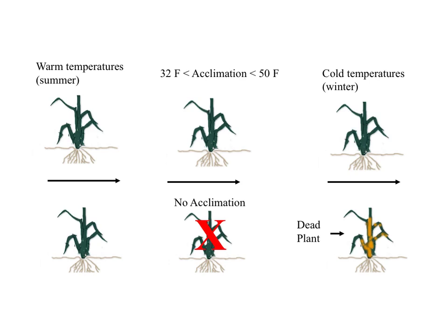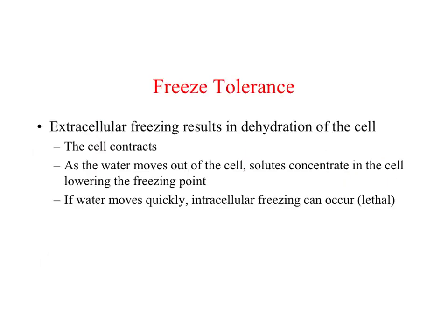Cold acclimation helps explain why a plant growing at a warm temperature and then exposed to freezing is killed, while the same plant exposed to a cold acclimation period prior to a sub-freezing temperature survives. As the turfgrass plants begin to acclimate or harden off, the plant cells begin to dehydrate — the water begins leaving the cells, which concentrates the solutes within the cell, lowering the freezing point within the cell.